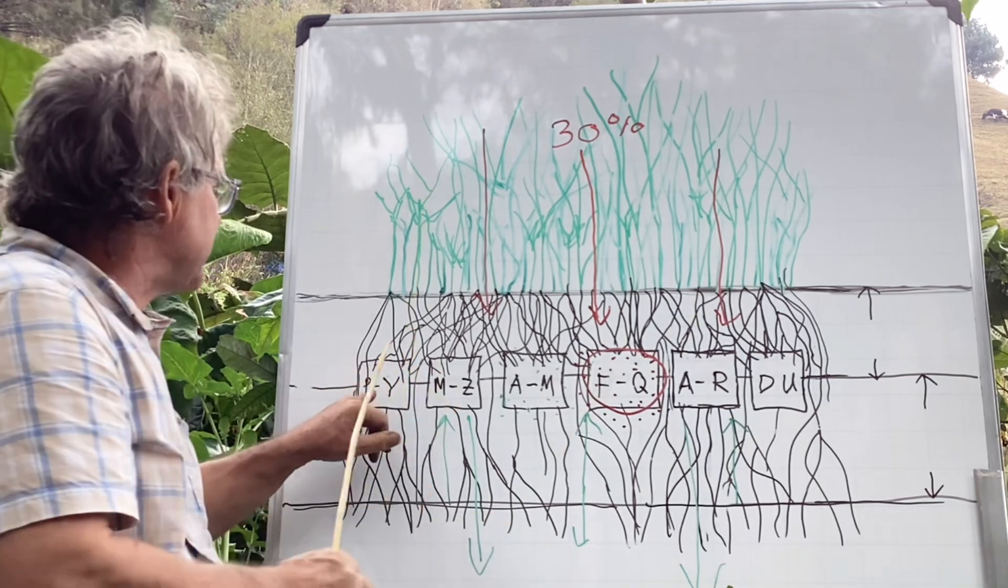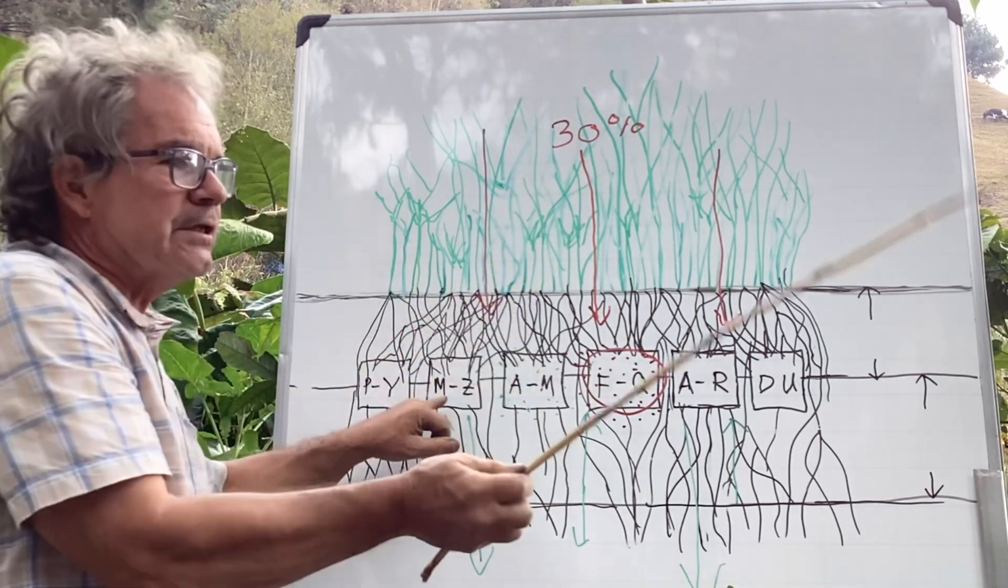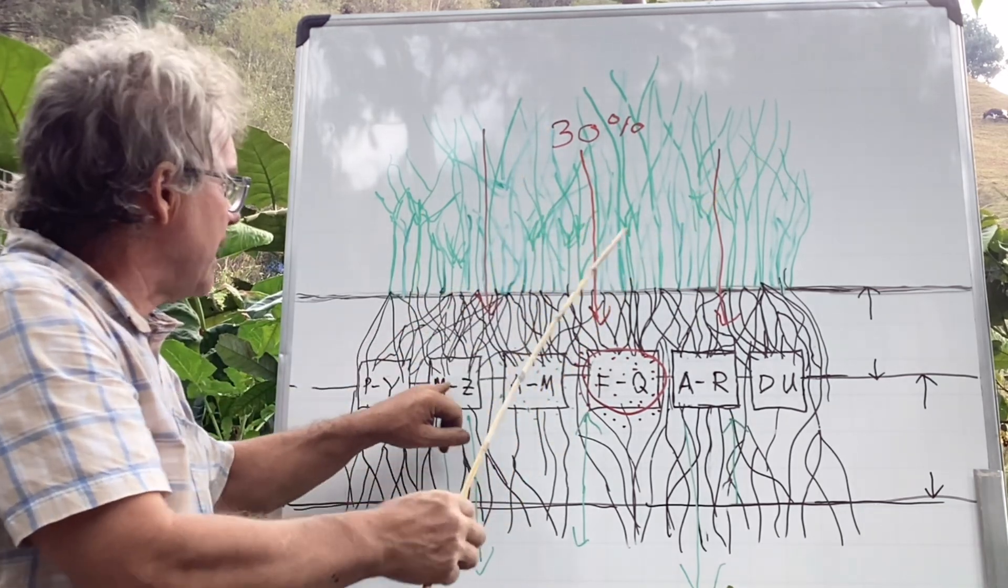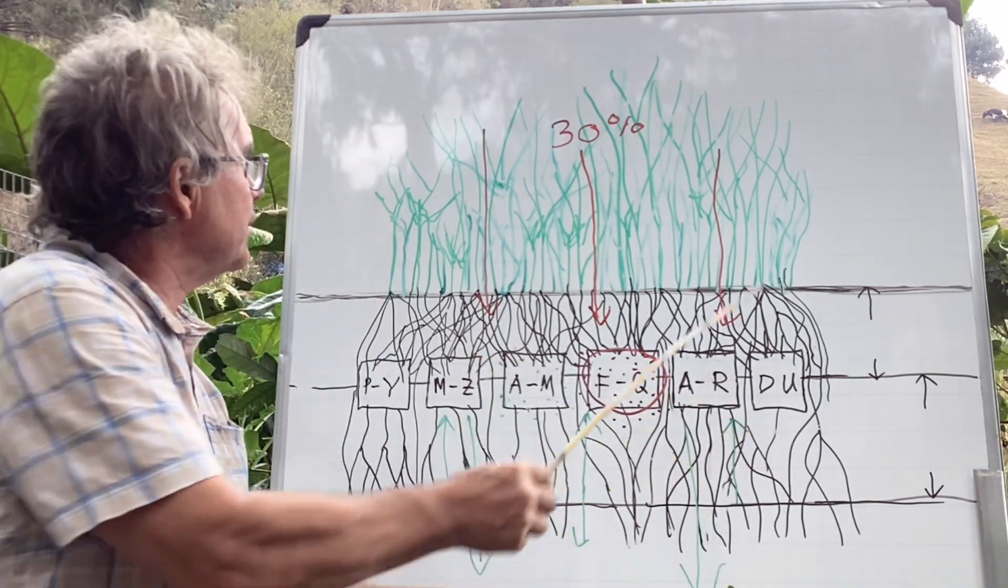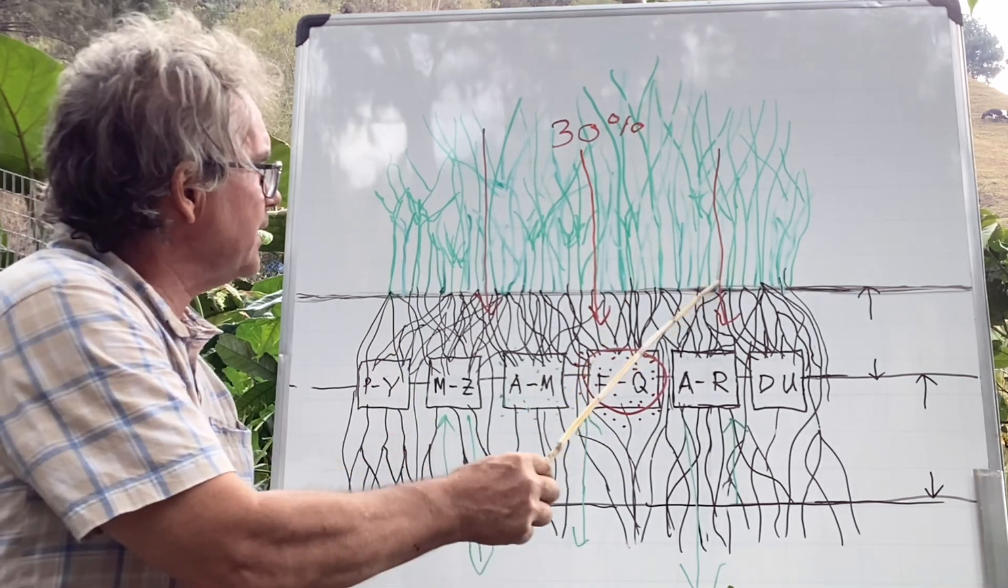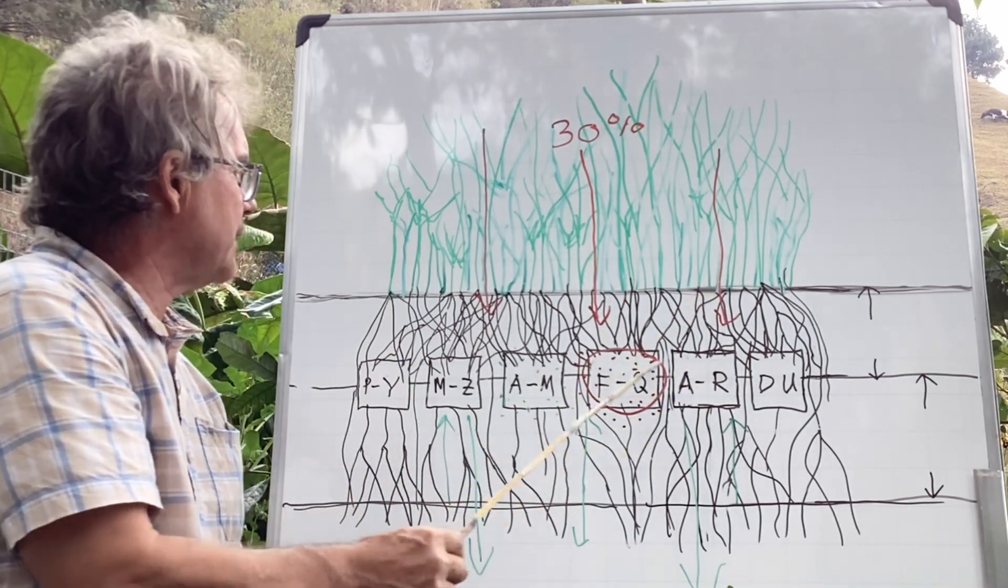So these plants send P to Y. I'm using letters to represent the diversity. M to Z, A to M, F to Q, A to R, D to U. So these plants are sending diverse energy back into the ground.